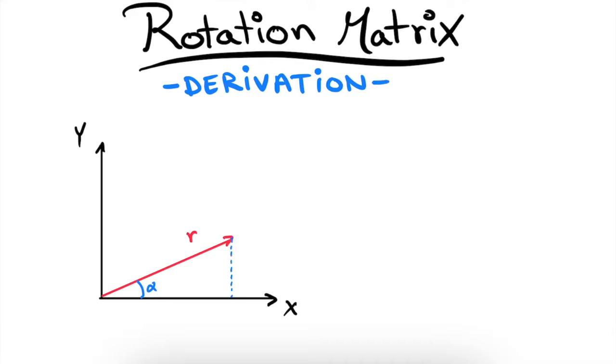Using these pieces of information we can write the x and y components of our vector. We can write x equals r times cosine of alpha and y equals r times sine of alpha. And if you're uncertain about how we can write it like this, I gladly refer you to my video on vector components where I go into detail why we can write it like this.